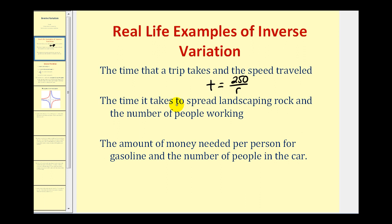The next example: the time it takes to spread landscaping rock and the number of people working. If the job is going to take 12 hours, the total time T to complete the job would be 12 hours divided by N, the number of workers. So one worker takes 12 hours, two workers takes six hours, three workers takes four hours, and so on. This is an example of inverse variation.